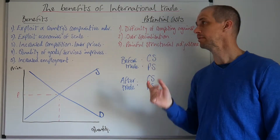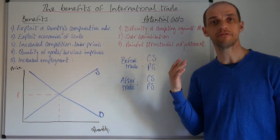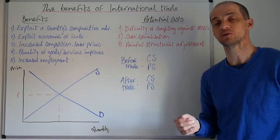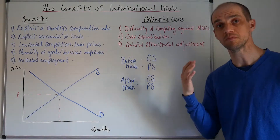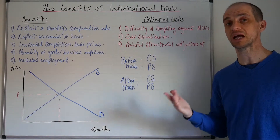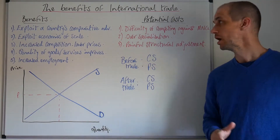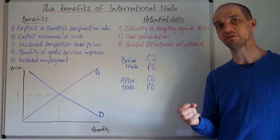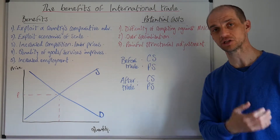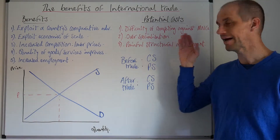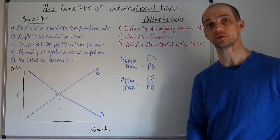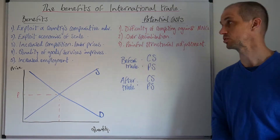What are the downsides then? Well, first up, we can see that for LEDCs, their industries may find it very difficult to actually compete against some of the most efficient firms globally — those are likely to be multinational corporations. So you may have an infant industry, say for the likes of Nigeria, which is trying to develop its manufacturing export sector and is really struggling to compete with multinational corporations that can produce at much lower costs.